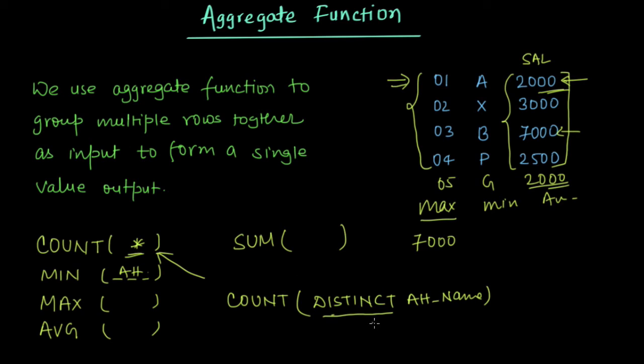Similarly, we can use distinct for average sum, for these two also, we can use distinct, we cannot use for minimum, maximum, we cannot use distinct, it won't make any sense.